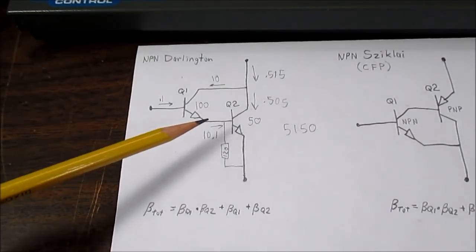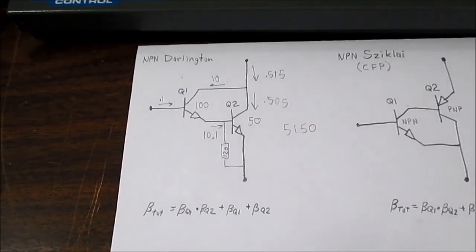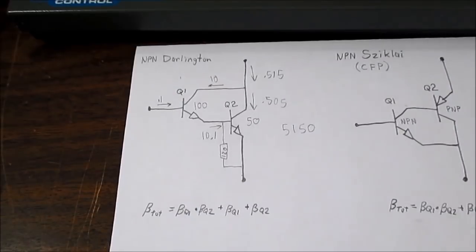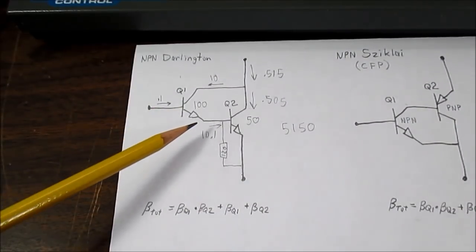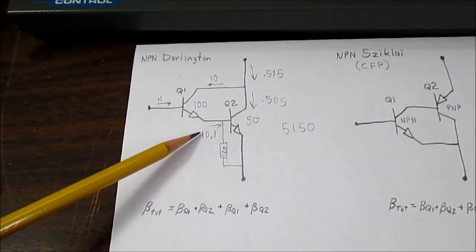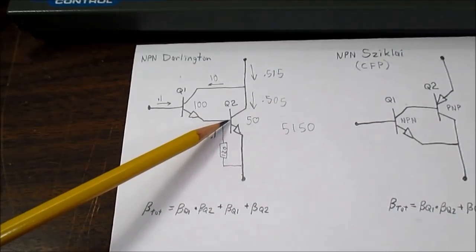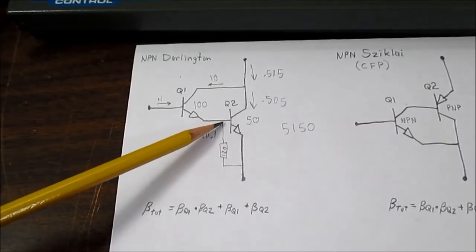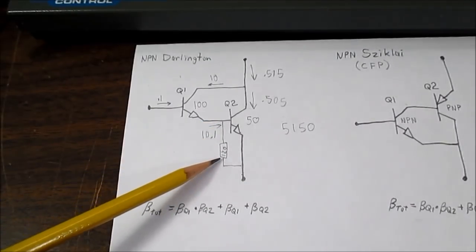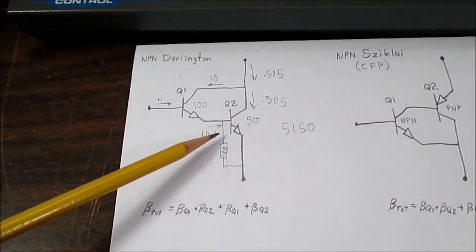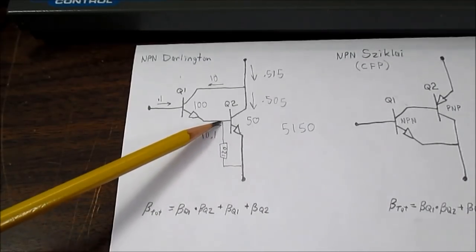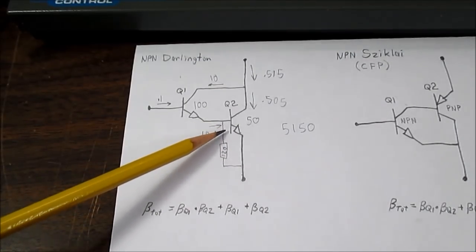One final thought on the speed-up resistor is the impact on gain. Yes, there will be an impact on gain. Using our previous example, we had 10.1 milliamps flowing into the base of this transistor. But now we added this resistor here of 120 ohms. To get the 650 millivolts needed to turn this transistor on, I have to put enough current through this resistor to do that.